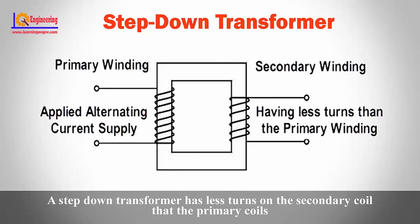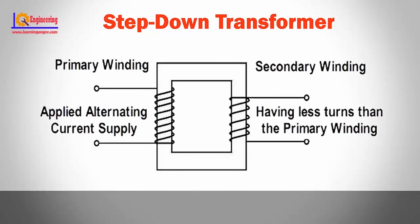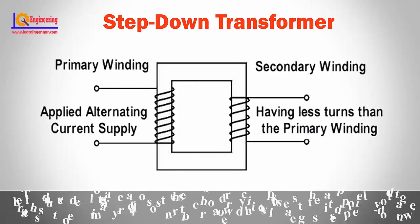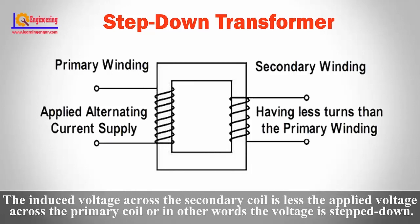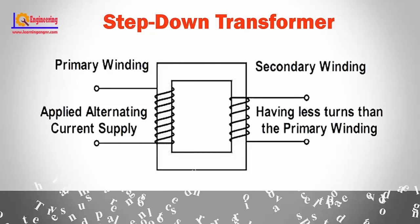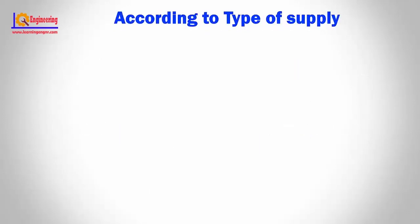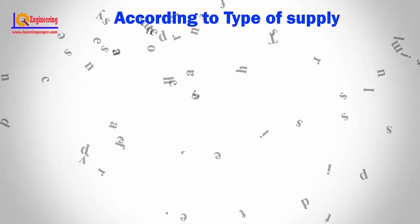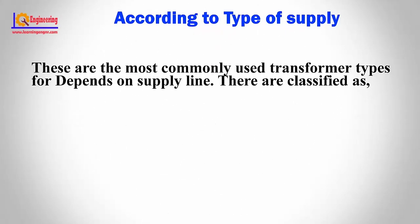Step-down transformer: A step-down transformer has fewer turns on the secondary coil than the primary coil. The induced voltage across the secondary coil is less than the applied voltage across the primary coil — in other words, the voltage is stepped down.